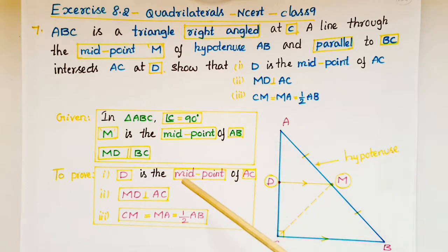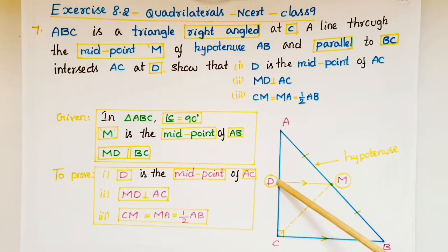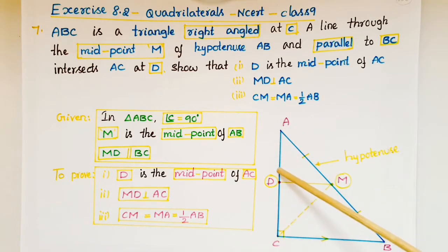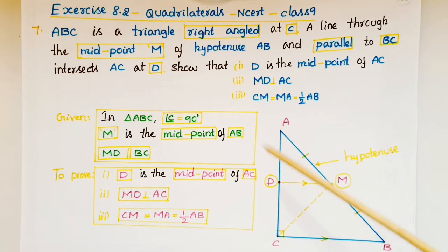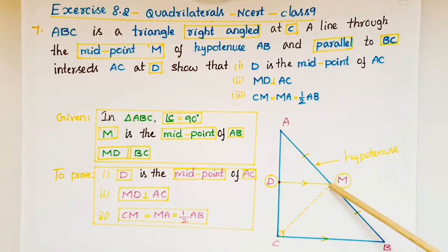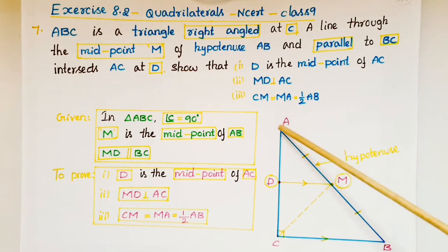We have to show three things: first, that D is the midpoint of AC; second, that MD is perpendicular to AC — meaning we have to prove that this angle is 90 degrees; and third, that CM is equal to MA is equal to half of AB. If you join C and M, you get line segment CM, and we have to prove that CM equals MA equals half of AB.